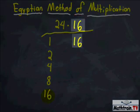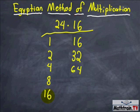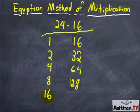And now for the 16 on the right side, we double it. So 16 doubled would be 32, 32 doubled would be 64, 64 doubled would be 128, and 128 doubled would be 256.